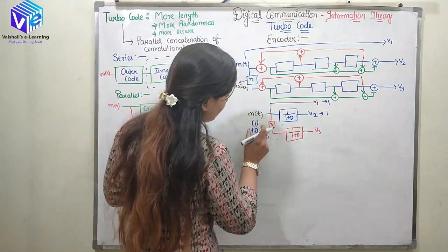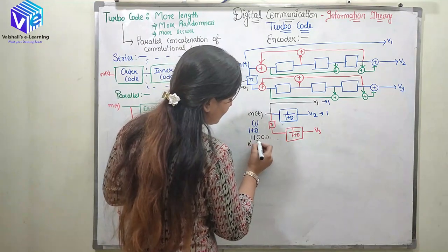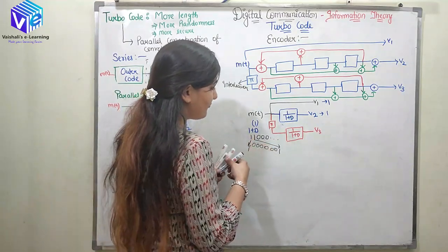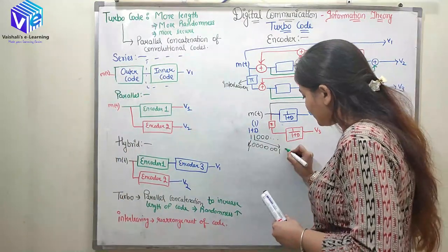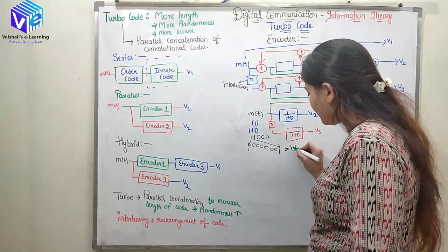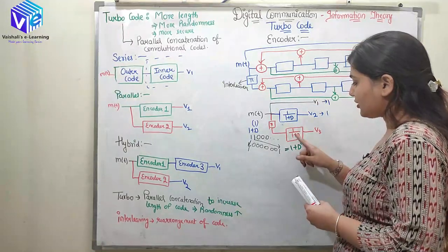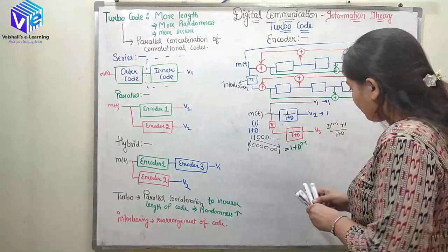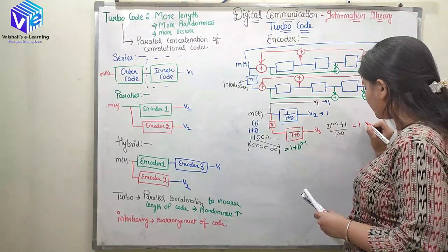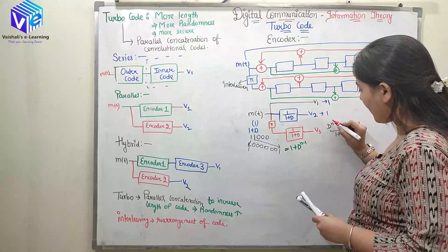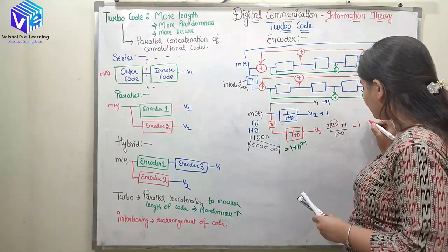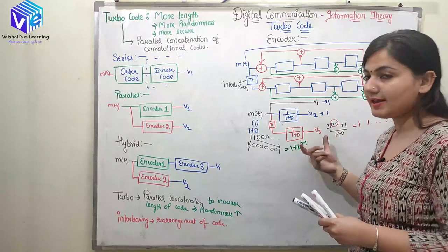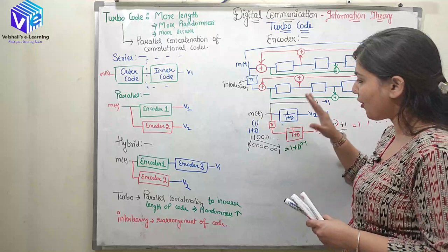Whenever this 1 is rearranged with the help of the interleaver, this 1 can go to the last position and in between I will have zeros. If I have n number of bits, it can be represented as the first bit is 1 and the last nth bit is 1, which means D raised to power n minus 1. Here I will get D raised to power n minus 1, plus 1, upon 1 plus D. I will get a lot of 1s — n minus 2 number of 1s. So I will get a long stream of 1s. This is how I can increase the length of the code with the help of turbo coding.